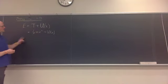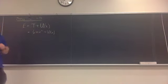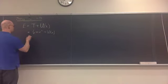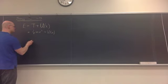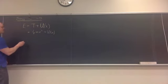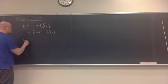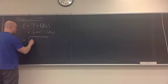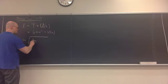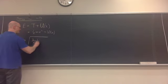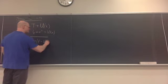If we use this, we can then solve for the velocity and then integrate. Solving for the velocity gives us that the velocity is equal to the square root of twice divided by mass of the energy minus the potential energy at any particular position.